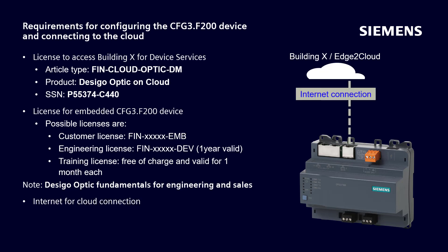An internet connection is required to connect from the device to the cloud. The gateway offers two network modes and accordingly the internet connections are different. Here we see the connection into the separate WAN port. In the second network mode, the internet connection to the LAN port is made together with the network for building automation. The meaning and selection criteria of both network modes are explained subsequently.